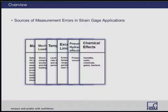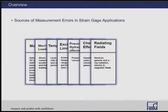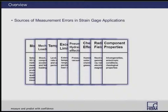There are also radiating fields: neutron, gamma, and x-ray radiation, as well as electric and magnetic fields that could interfere with measurements. Component properties matter too — for example, making measurements on soft materials or concrete where the inhomogeneities of the material are a factor. And lastly, cable effects: resistance, capacitance, symmetry of the cable, surge impedance, and insulation screen.